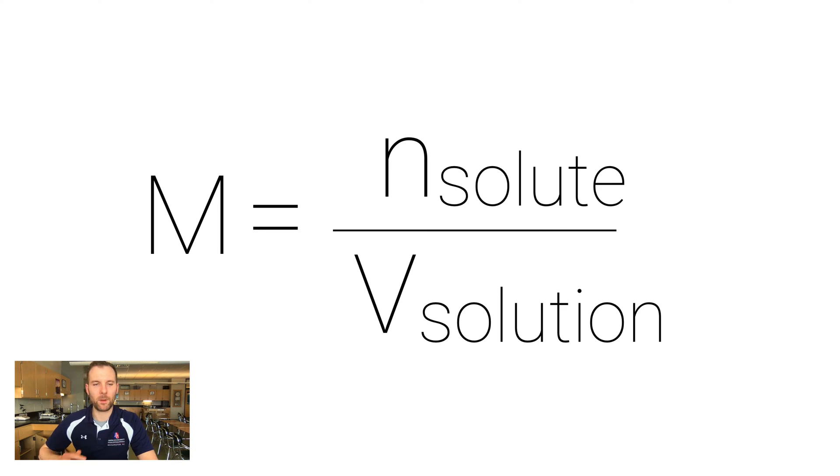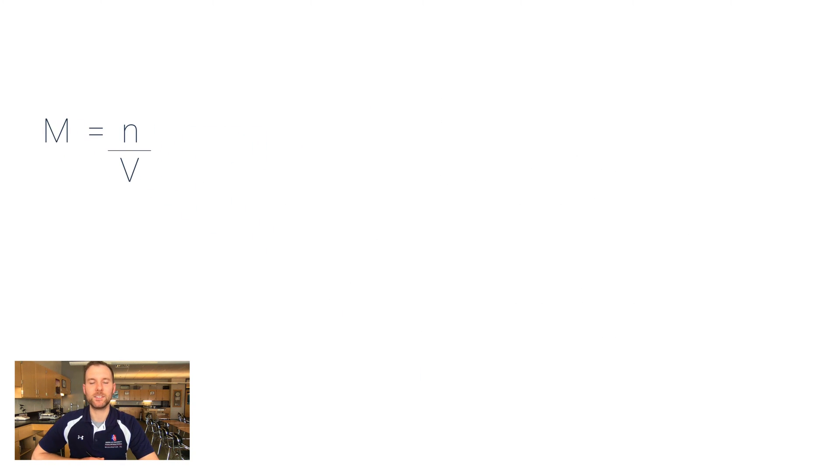Molarity, which is this big capital M here, is the number of moles n (and then sub solute here just to remind you that we're not looking for the moles of the solvent, we're looking for the moles of the thing that we've added) divided by the volume of the solution. But it's got to be in liters. And so very often you just see this M equals n over V. What's meant is n of solute (the moles of solute) per V of solution (the liters of solution, that's a volume expressed in liters).